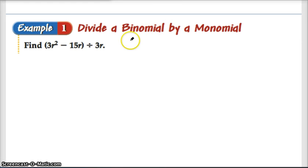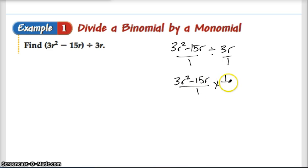There are a couple ways that we can look at a problem like this. Here we're dividing a polynomial, means many terms, 3r squared minus 15r. We're dividing it by 3r. And what we can do is we can write it as 3r squared minus 15r divided by 3r. If I treat them like fractions like we did in the last section, we could write this as 3r squared minus 15r over 1 times 1 over 3r. Remember taking the reciprocal after changing the division sign to multiplication.